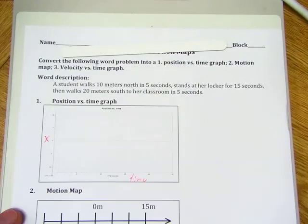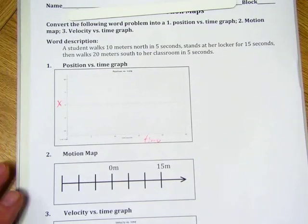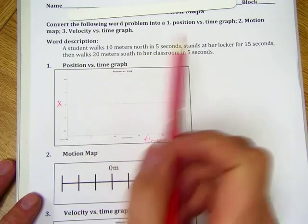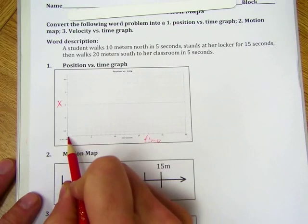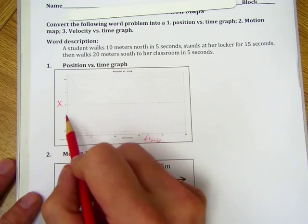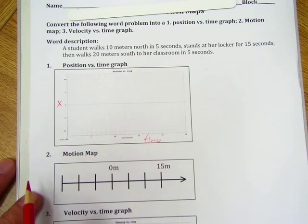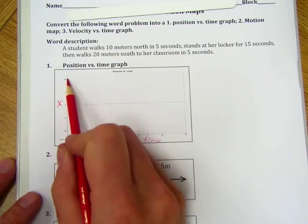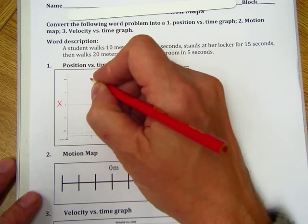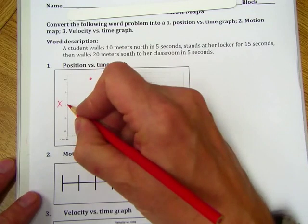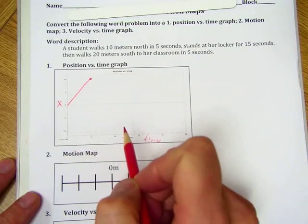So let's zoom in and try this one right here. A student walks 10 meters north in 5 seconds. We've got the time down here starting at 0. We'll just put her at 0 here, and it says she walked 10 meters north in 5 seconds. So 10 meters north, let's give it a direction, in 5 seconds, and that's right here. So she started here, and she walked 10 meters north in 5 seconds.